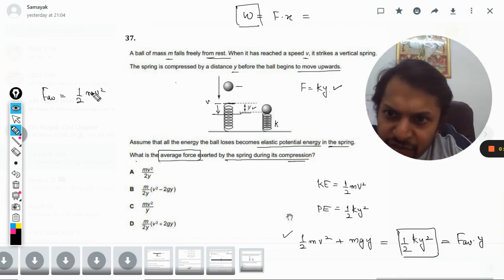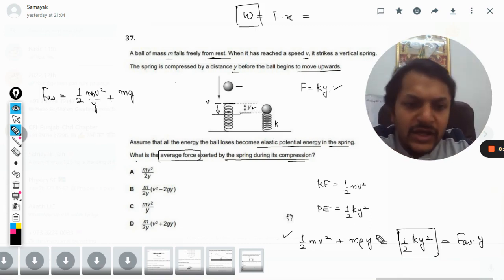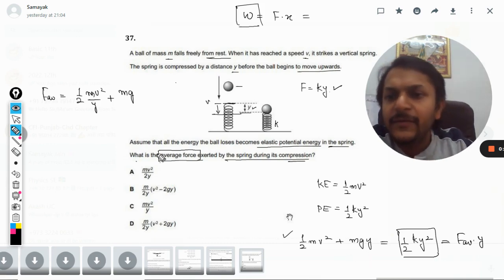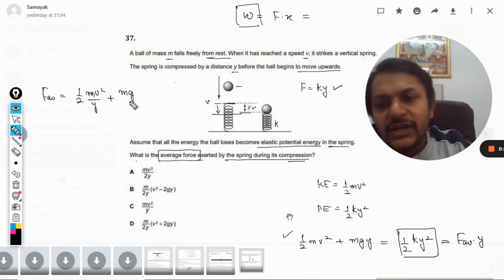Half mv squared divided by y, plus mgy divided by y. So y will get cancelled with y. I have just cross-multiplied y here in the denominator. So we will get this equation.